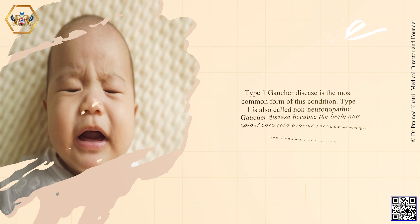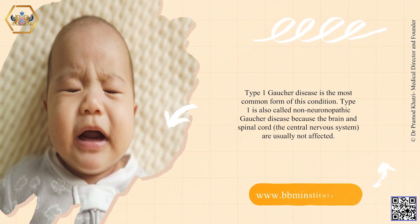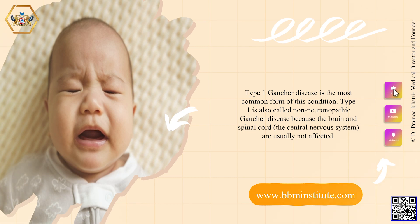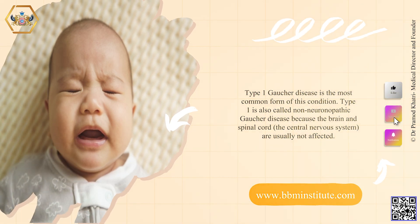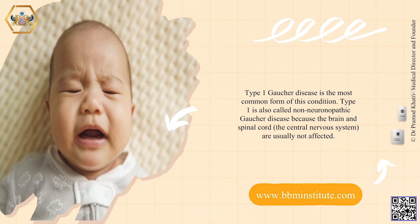Type 1 Gaucher disease is the most common form of this condition. Type 1 is also called non-neuronopathic Gaucher disease because the brain and spinal cord, or the central nervous system, are usually not affected.